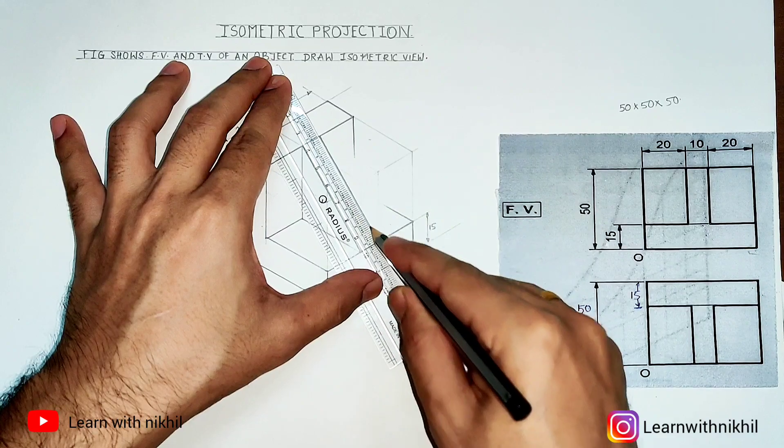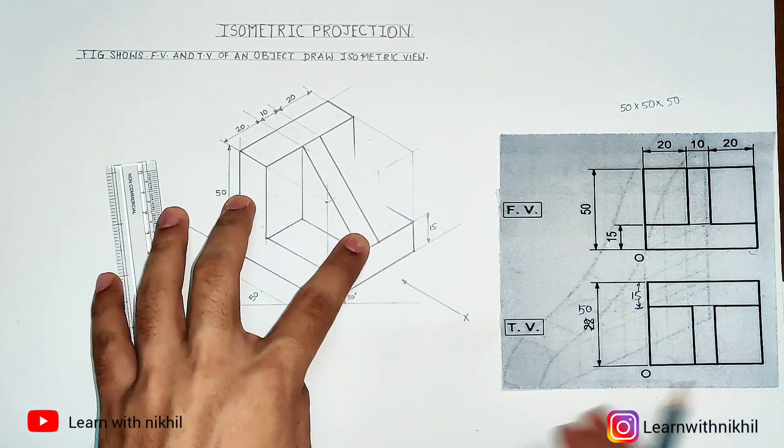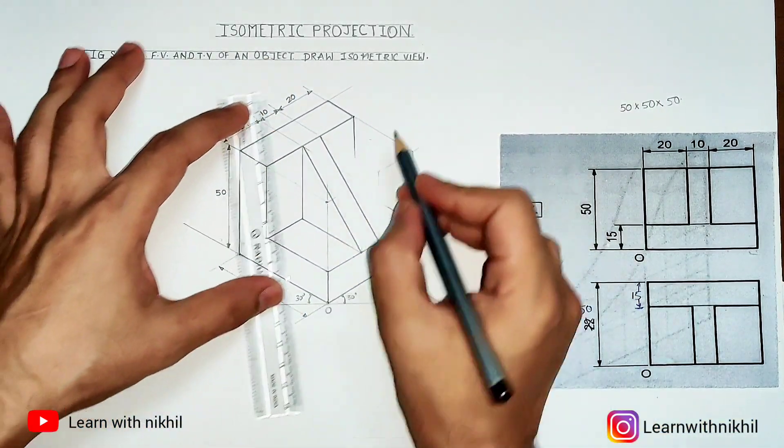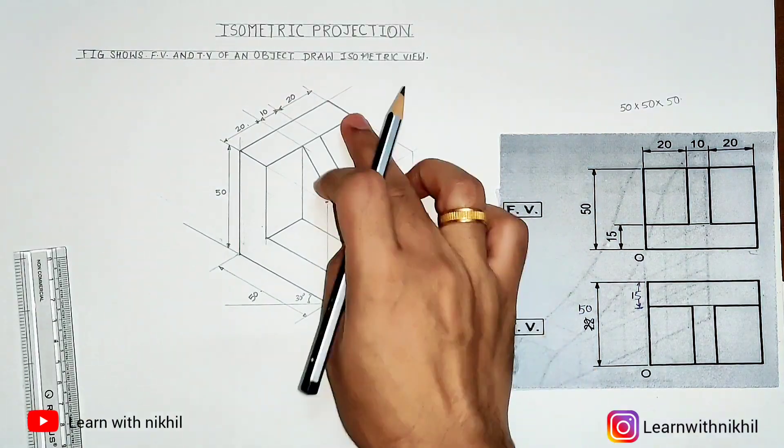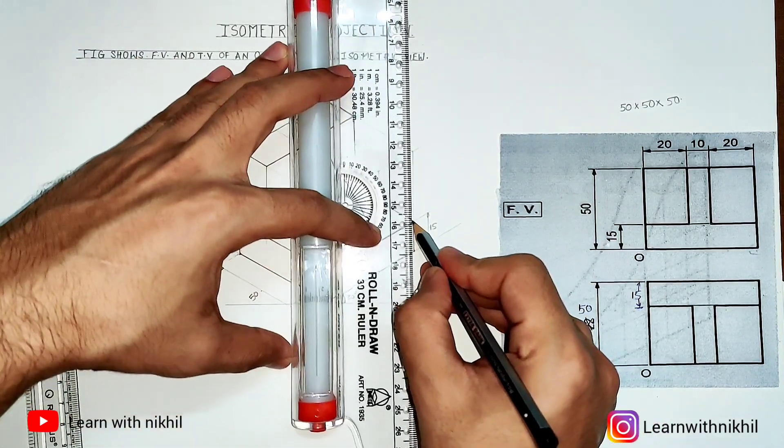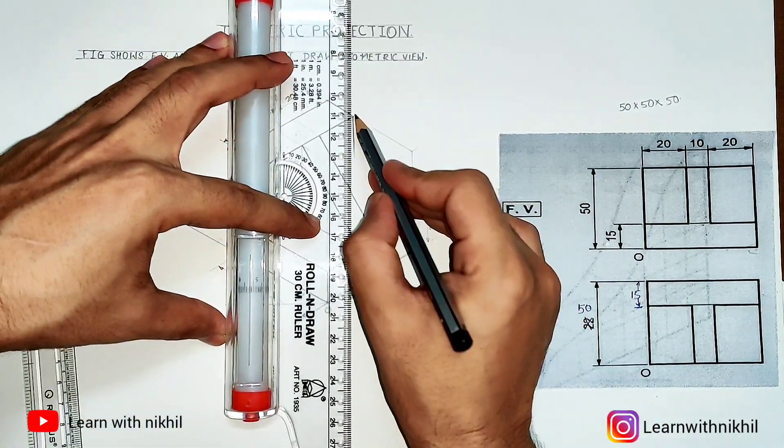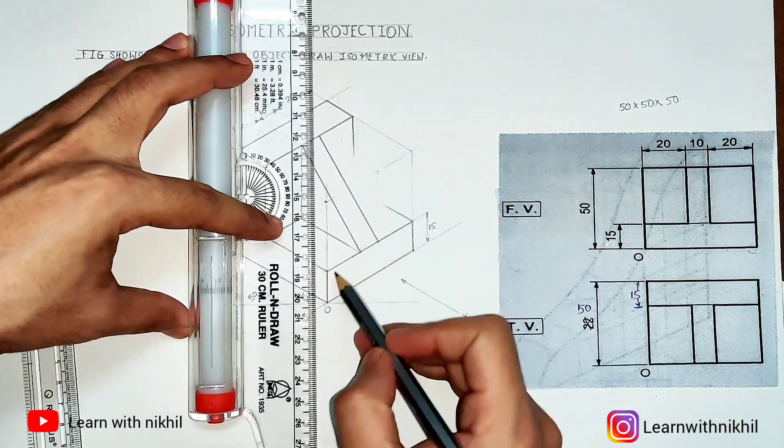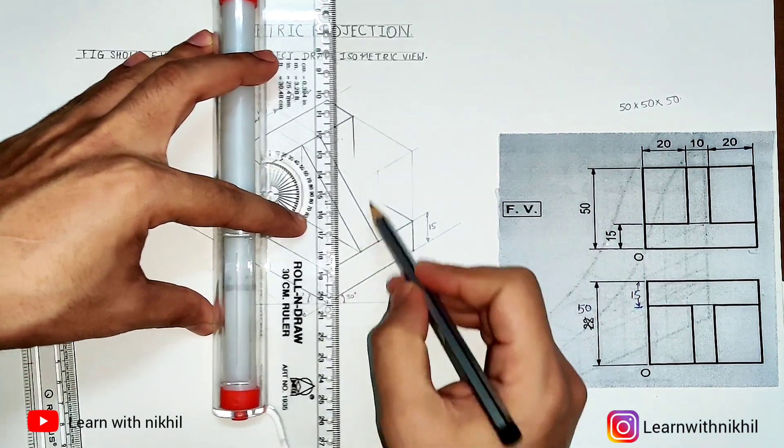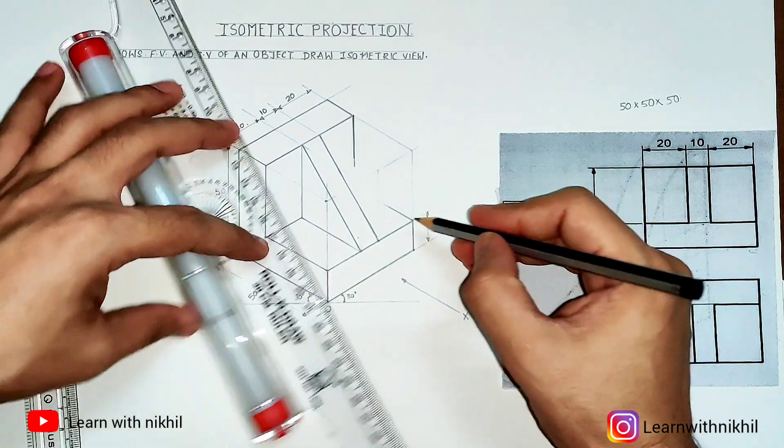So from the front view, you can see the slant line looks like a rectangle, and also from the top view, the slant line looks like a rectangle. Now completing this block, this line will extend downwards till where...